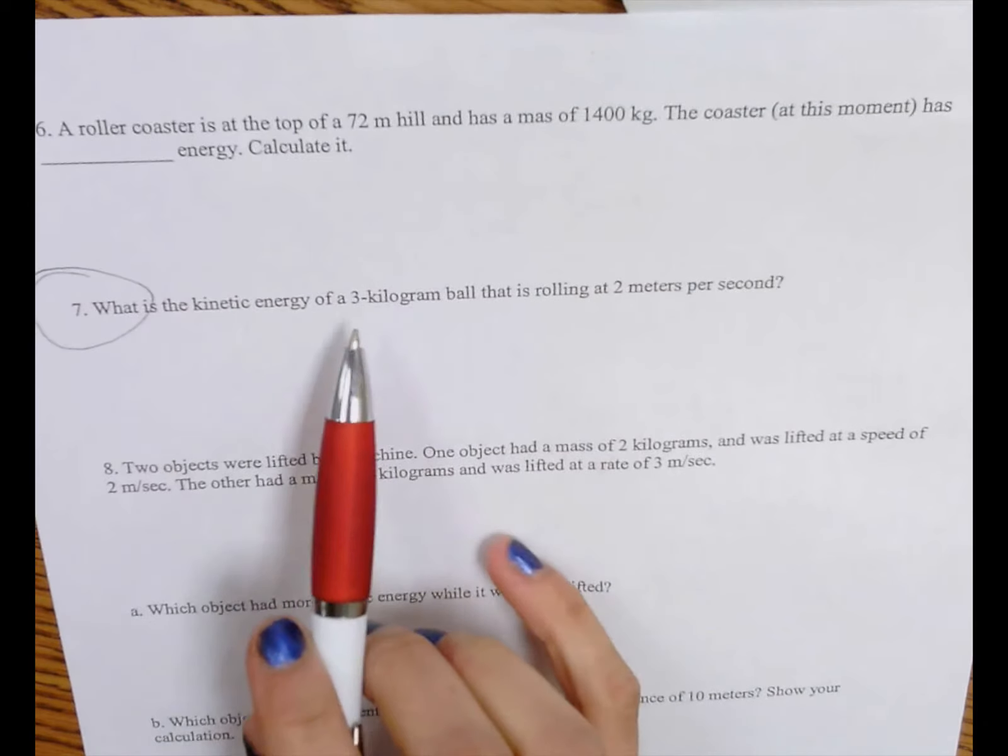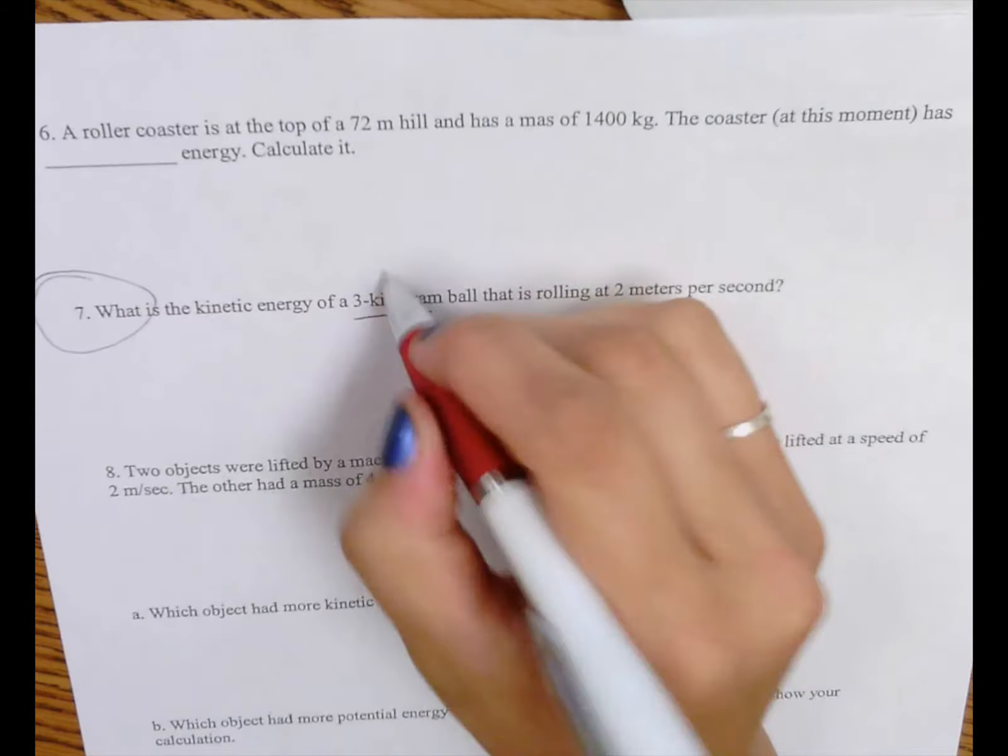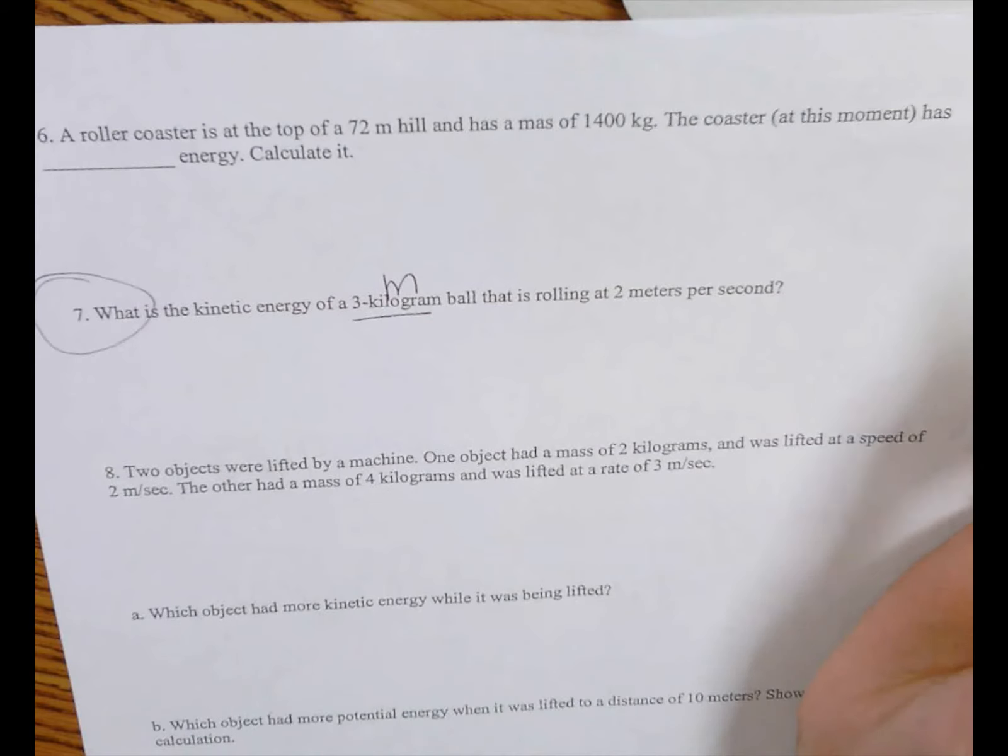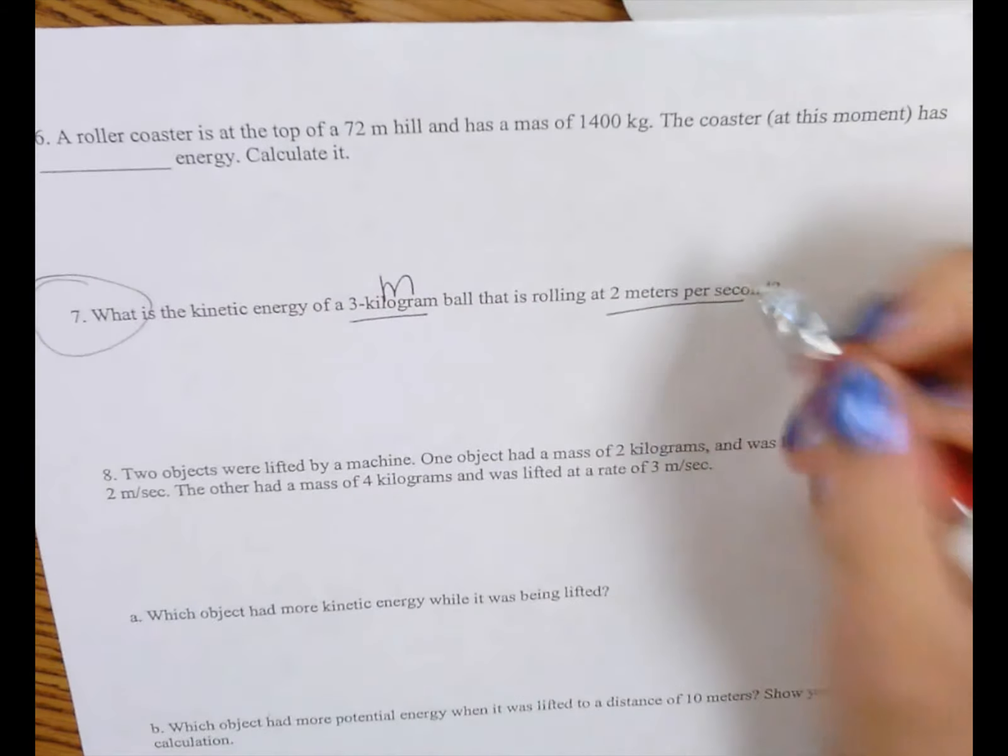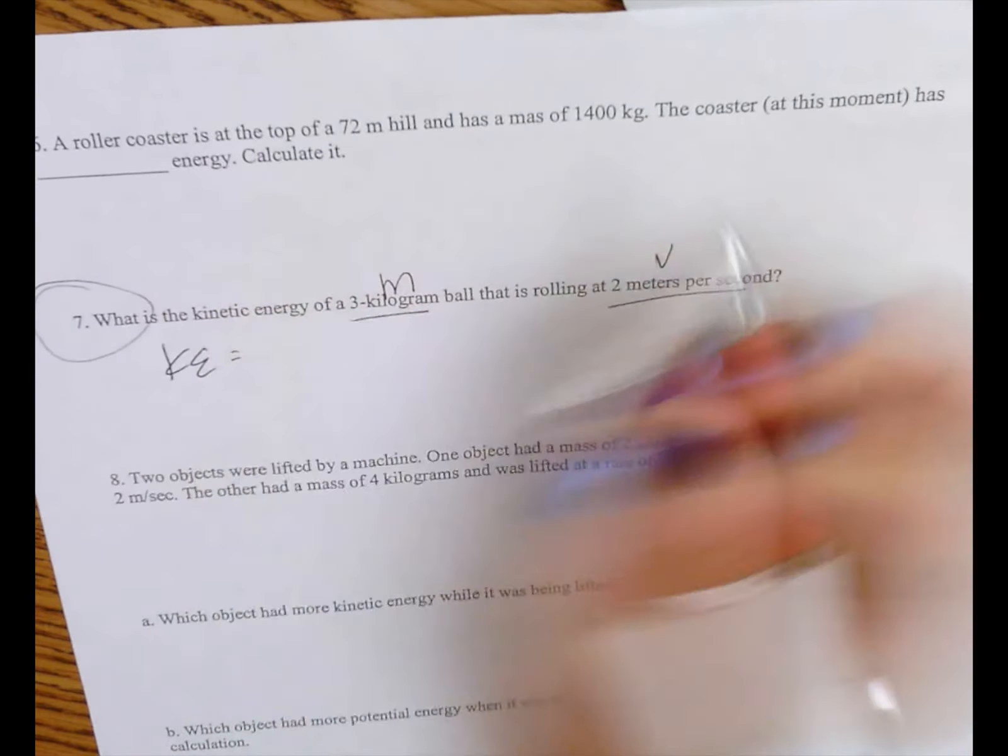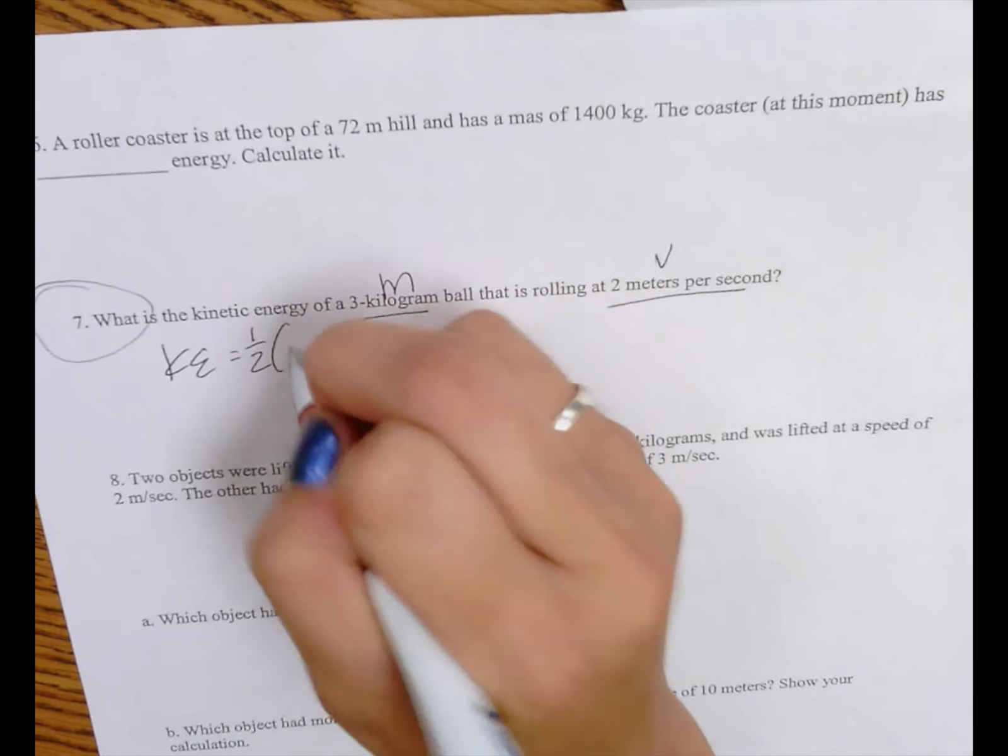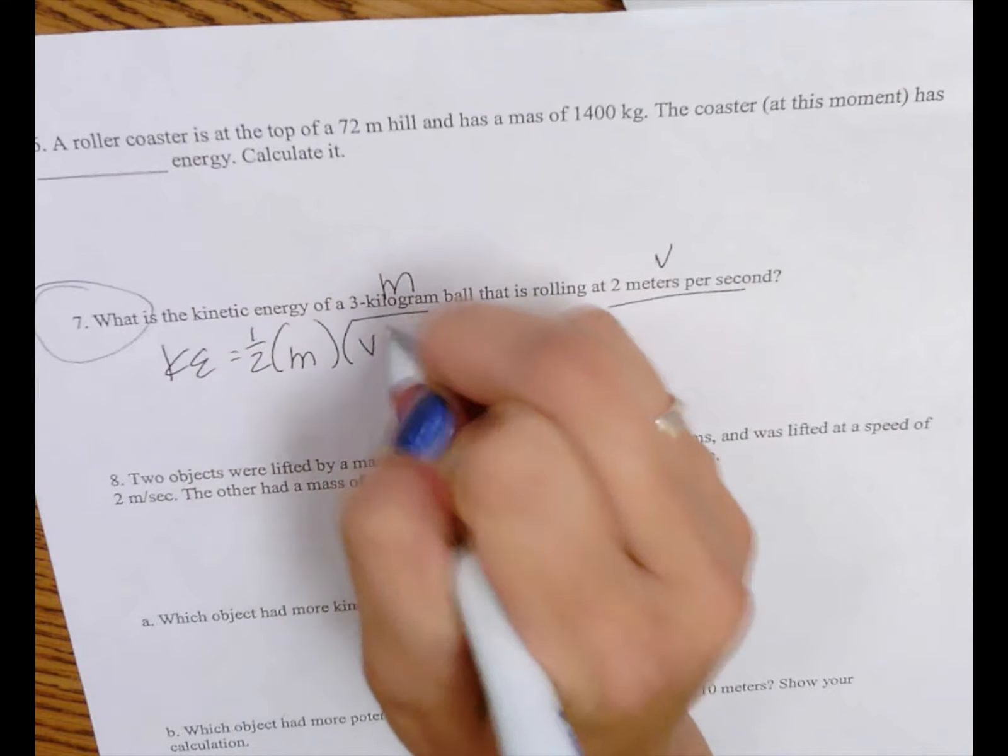What is the kinetic energy of a 3 kilogram ball, so it's asking you the mass, that is rolling at 2 meters per second? And this is the velocity. Remember that kinetic energy is equal to 1 half times mass times velocity squared.